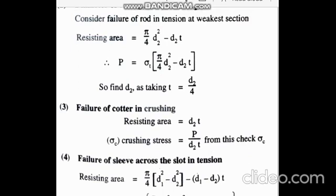After finding d2 and t, check the induced crushing stress. The cotter crushes against the enlarged rod portion — crushing area is d2 × t. So sigma c induced = P / (d2 × t). If sigma c induced is less than the permissible sigma c given in the problem, the design is safe. Otherwise, increase one of these dimensions and recalculate.